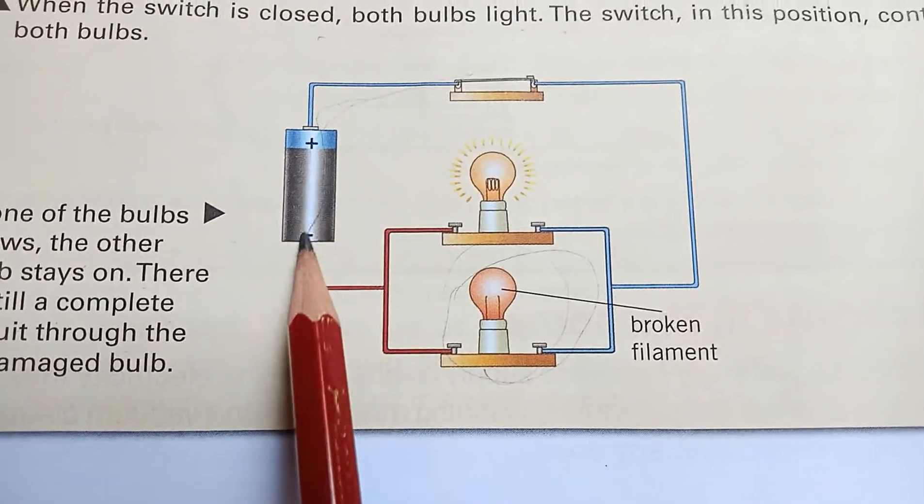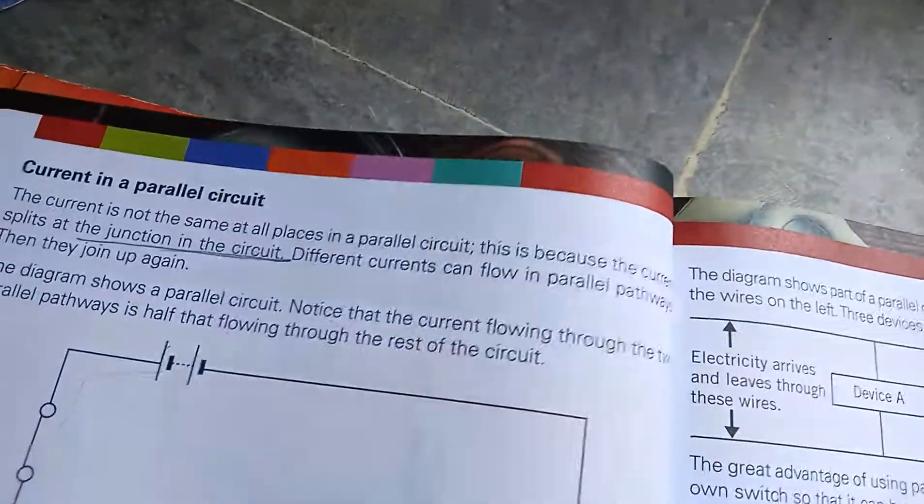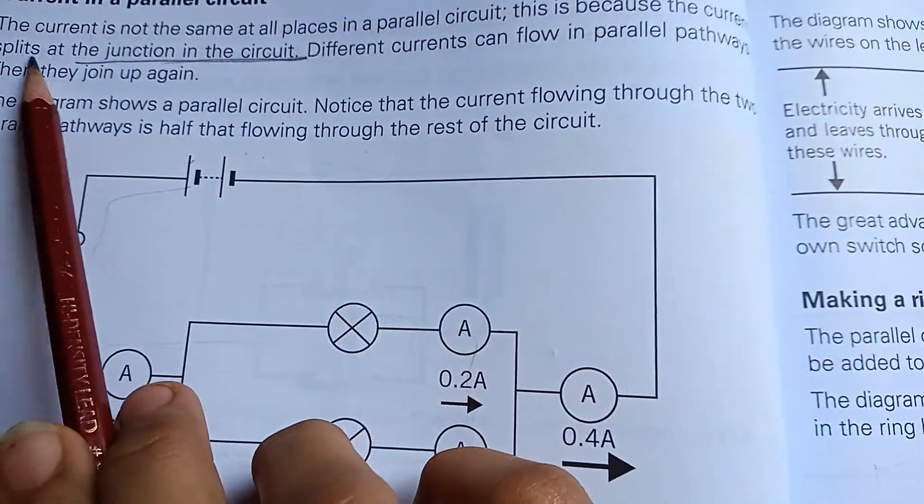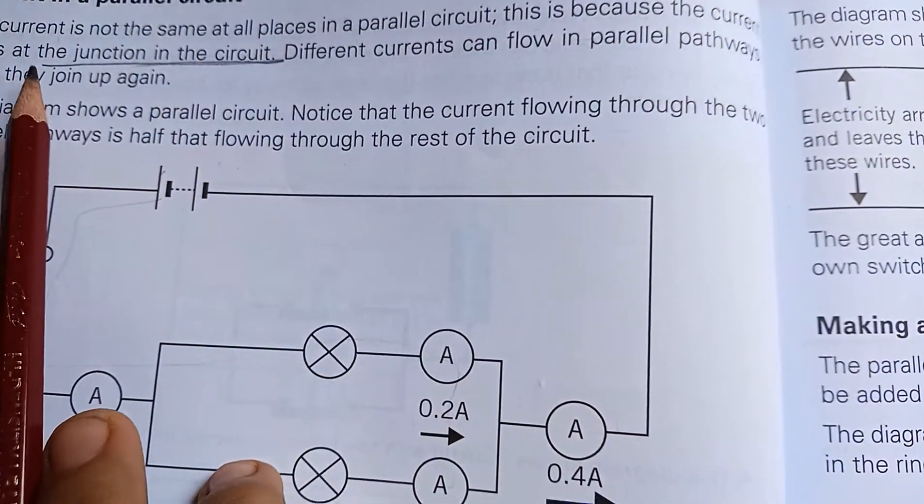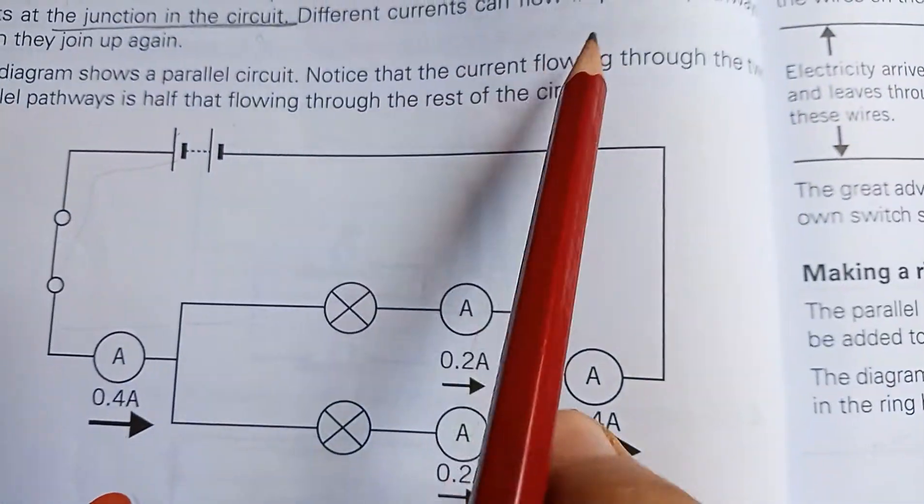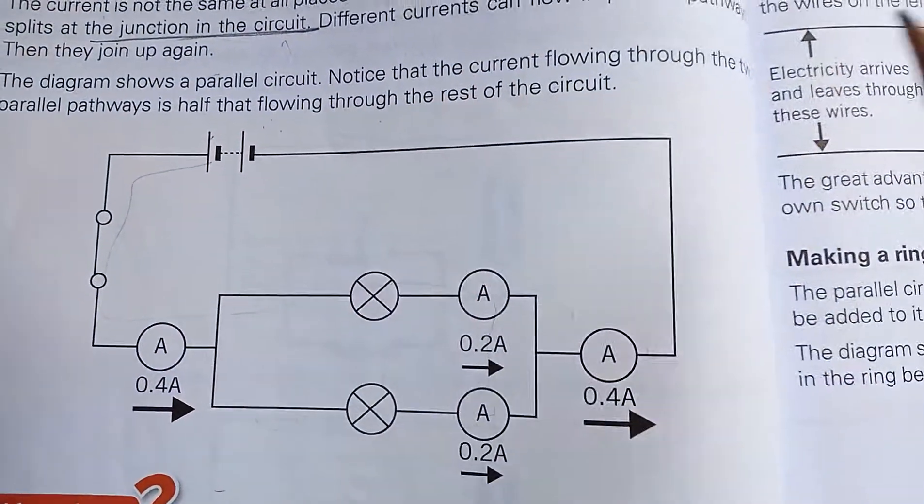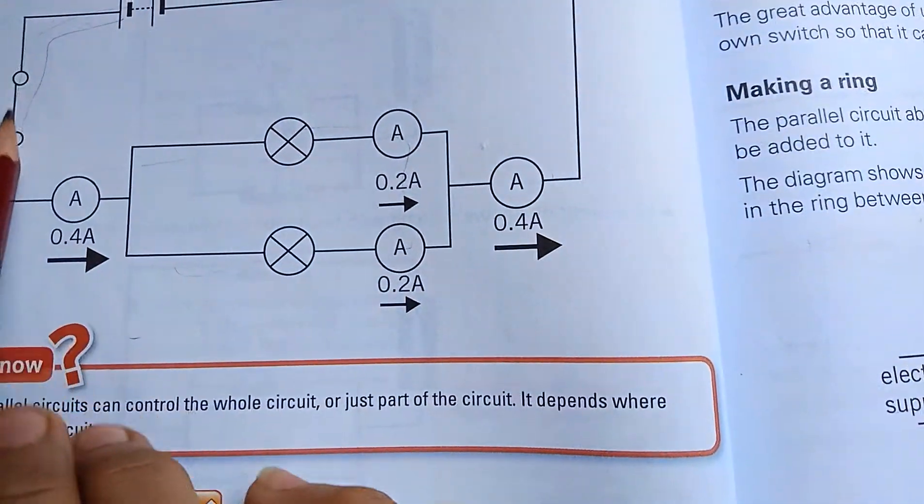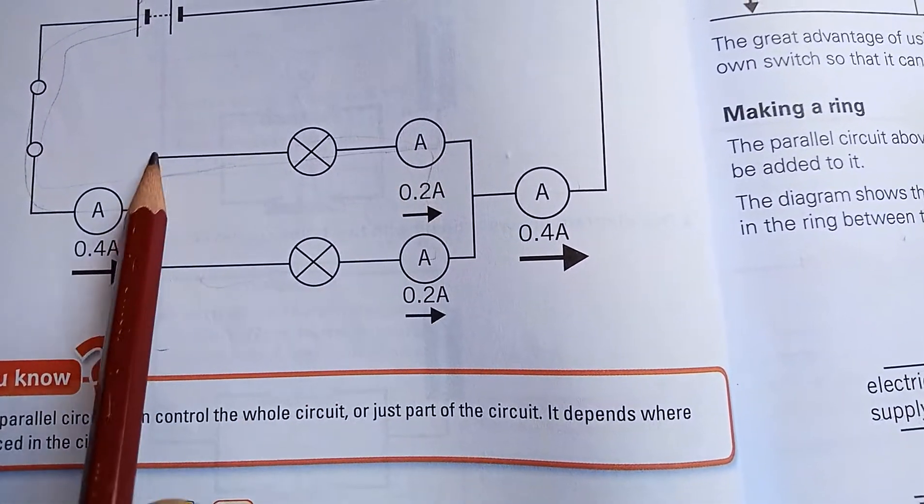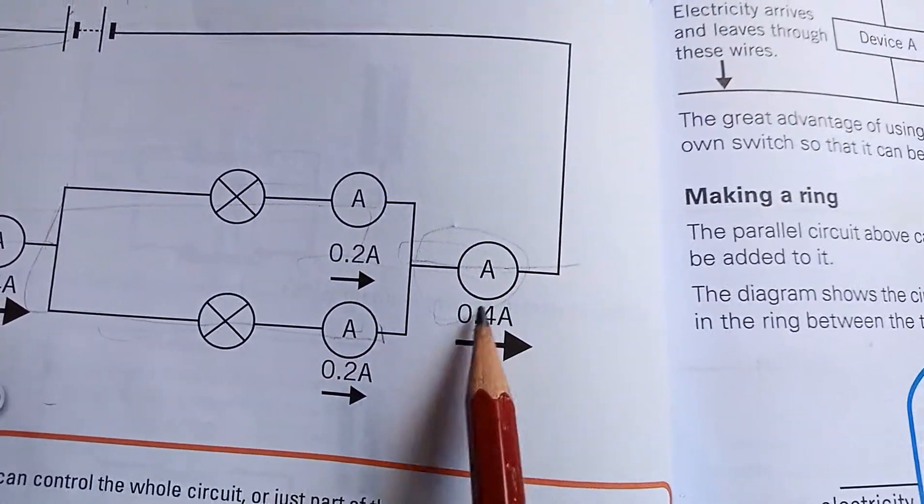How current flows in parallel circuits: The current is not the same at all places in a parallel circuit because the current splits at the junction. Different currents can flow in the parallel pathways and they join up again. The diagram shows that the current flowing through the two parallel pathways is half that flowing through the rest of the circuit. The current divides into two parts and when it becomes one path again, it becomes stronger—four amperes.